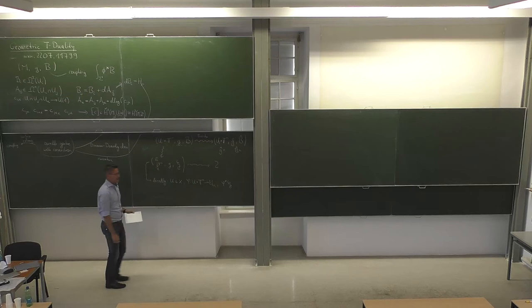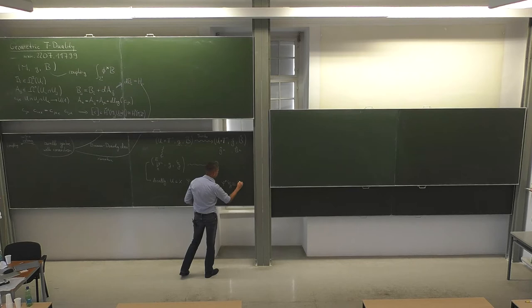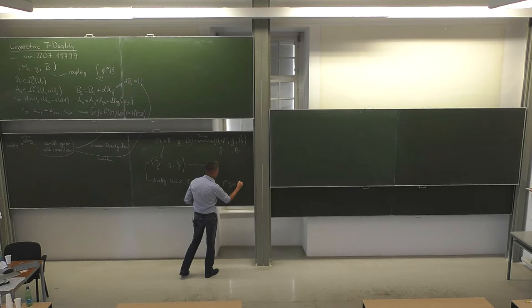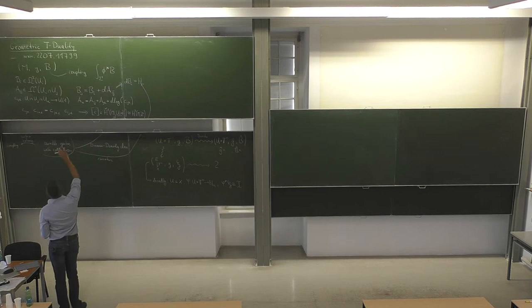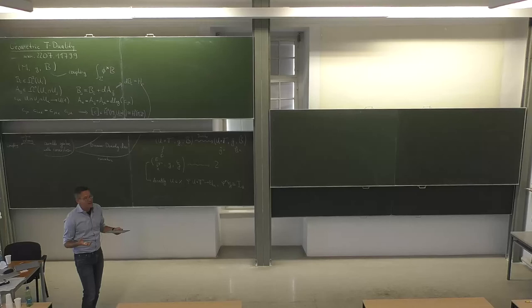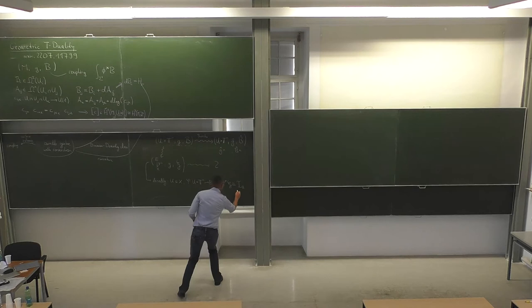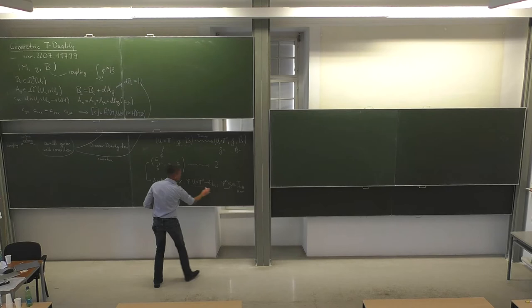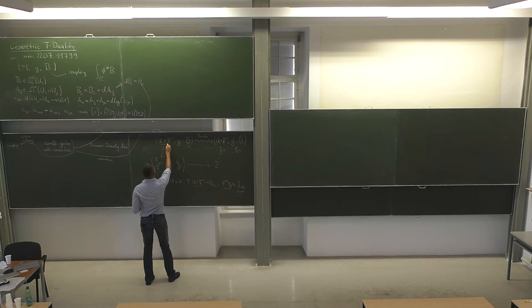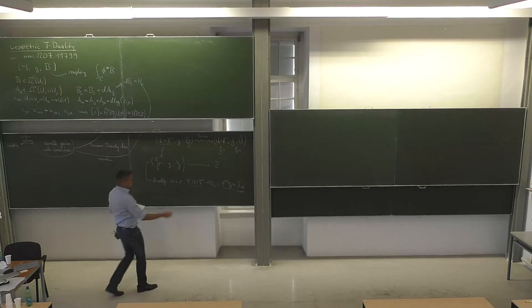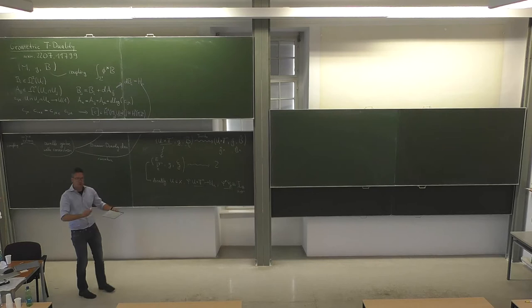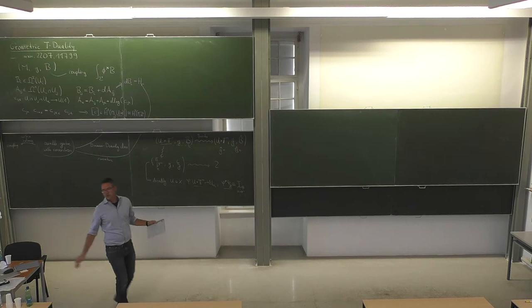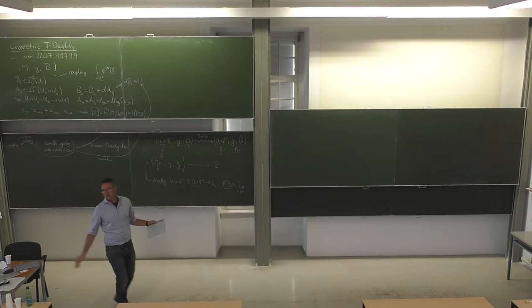We pull back the bundle gerb and trivialize it, which means it becomes a globally defined two-form — the remaining part of the connection under a trivialization. Now we have a trivial torus bundle with a B field and a metric, and we can apply the Buscher rules locally. However, there is a problem: computing the dual metrics and dual B fields locally and then trying to glue them together on the dual side doesn't work. This was noted soon after Buscher published his rules, by Alvarez, Alvarez-Gaumé, and others, and is the famous topology change in T-duality.